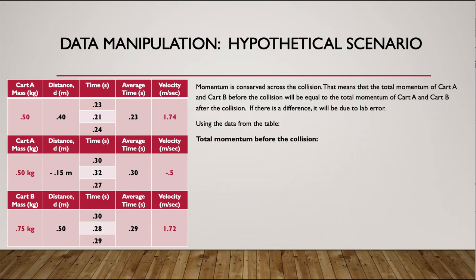So if we look at the momentum before the collision, all we're doing is the mass of A times the velocity of A plus the mass of B times the velocity of B. Well, we know the mass of A is 50, comes from there.